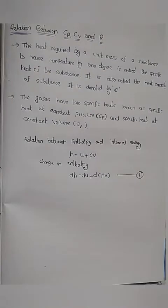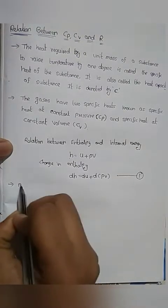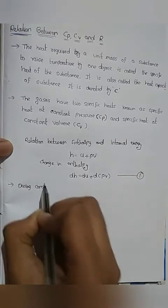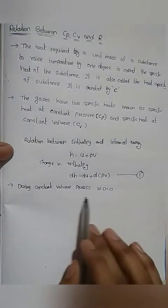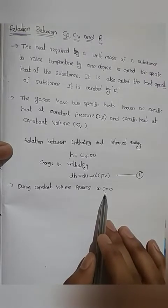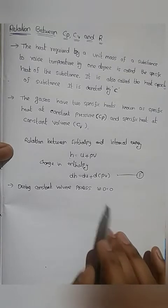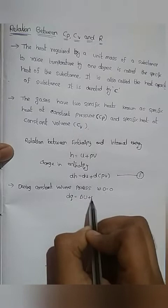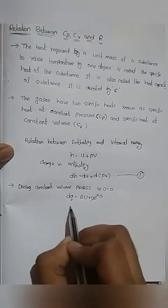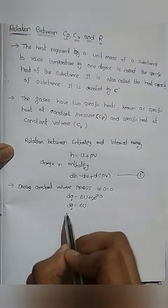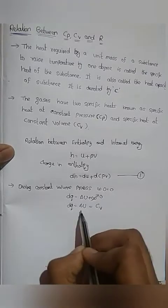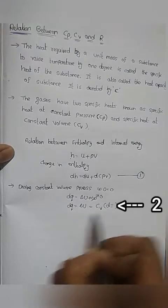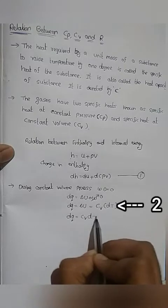Next, we consider thermodynamic processes — constant volume and constant pressure. During the constant volume process, work done is zero. From the first law energy equation, dQ = dU + W, since W = 0, we get dQ = dU. Since internal energy is a function of temperature only, at constant volume dU = Cv·dT. Therefore dQ = Cv·dT. This is equation number 2.